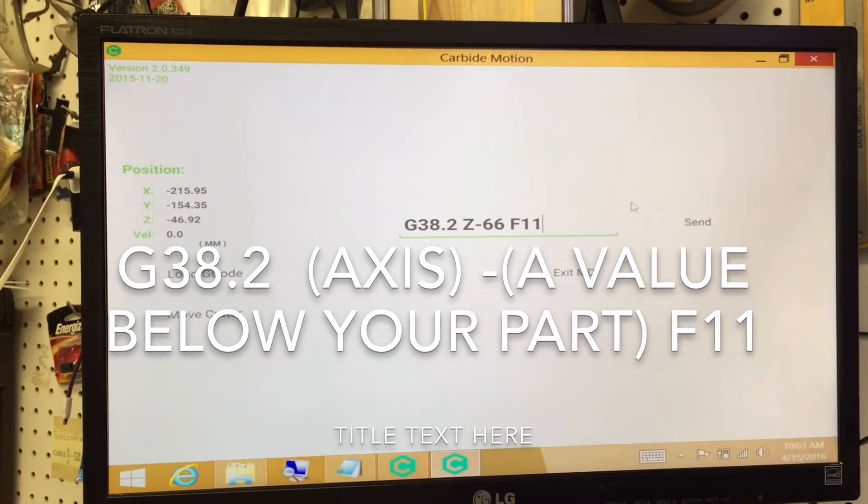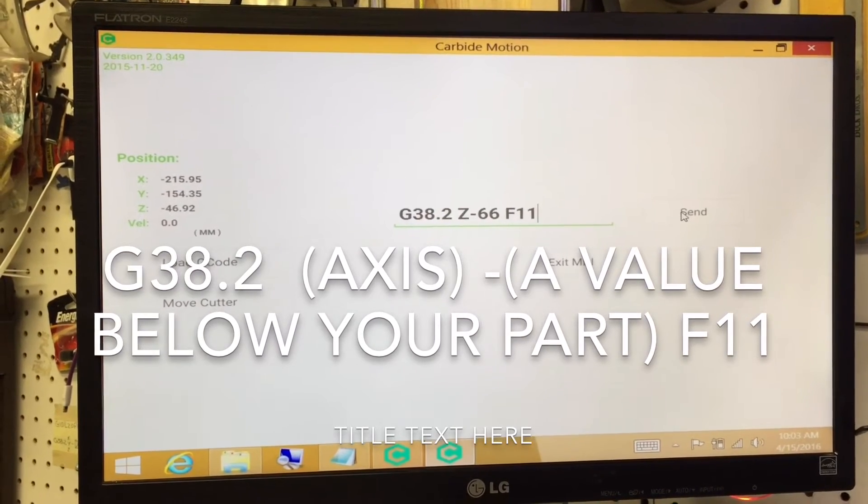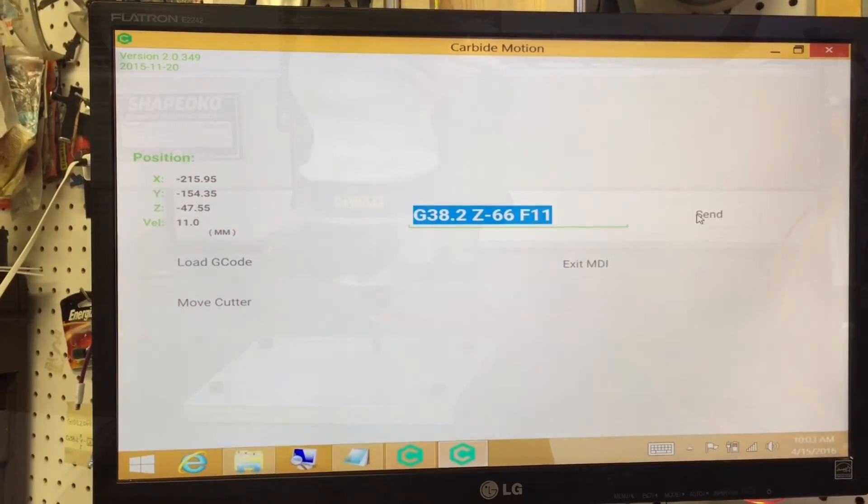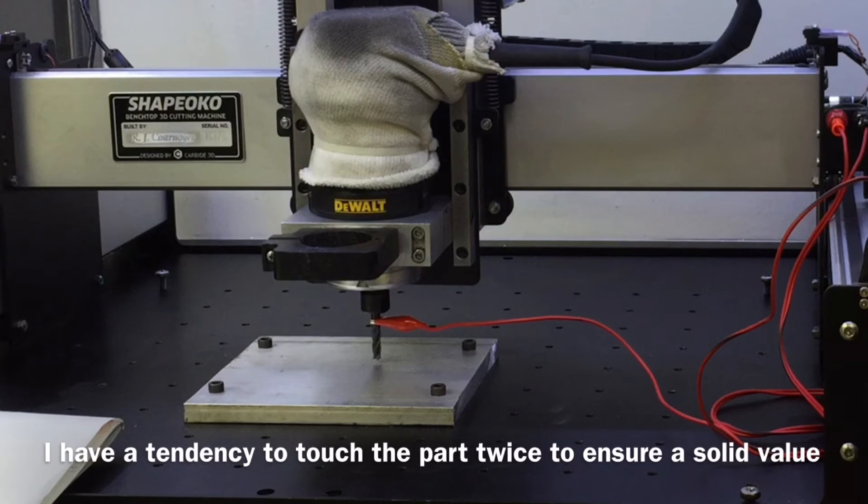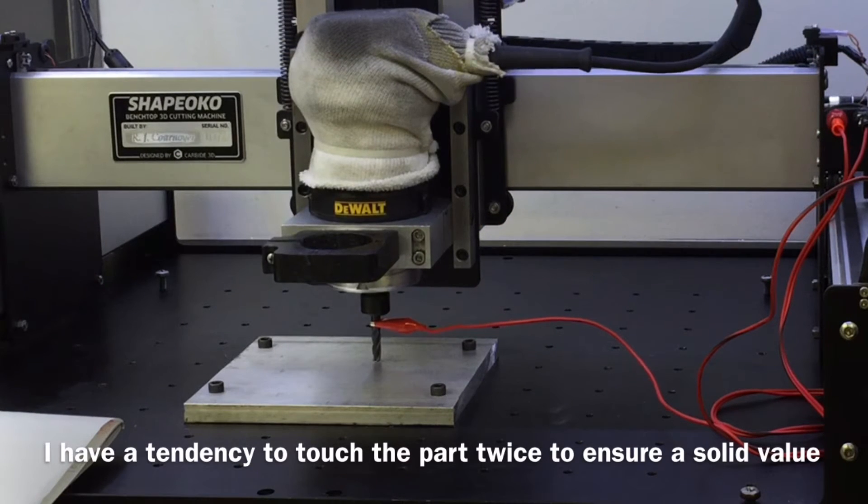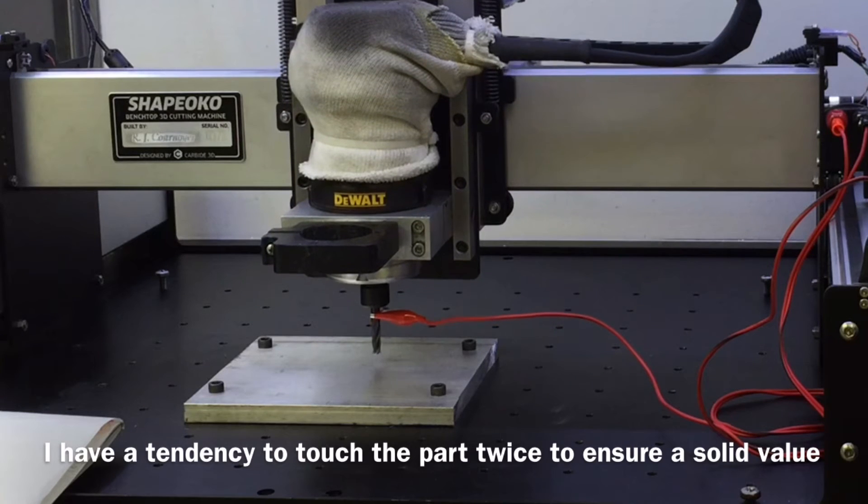Now this value here is a little bit tricky. So the axis of your preference—X, Y, or Z—a value either to below your workpiece, to the left, or to the right. It just needs to move the probe in a direction until it hits the part. Some of you may say, 'Oh, you will damage the cutter.'